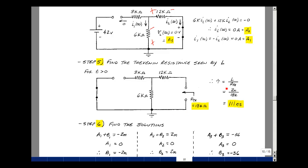What you see looking back here is the 12k in series with the 6k. So my time constant is L over R Thevenin. So I have 2 millihenries divided by 18k is 111 nanoseconds.